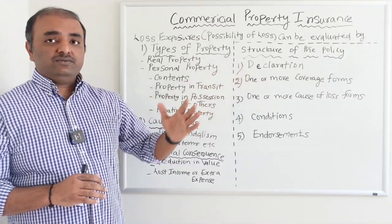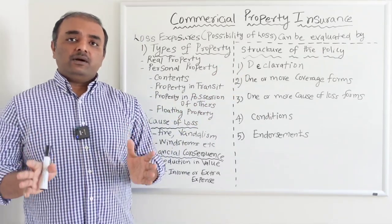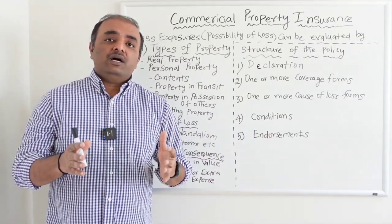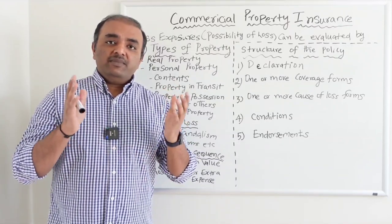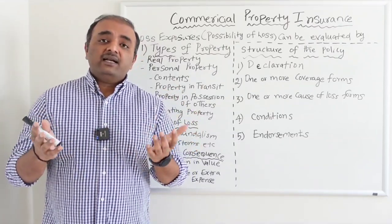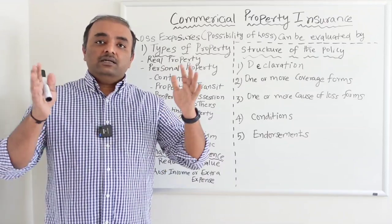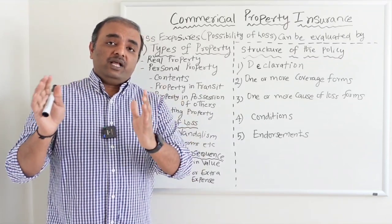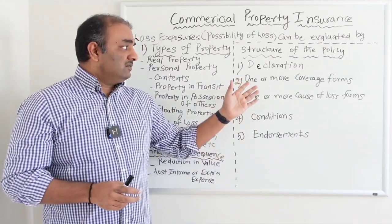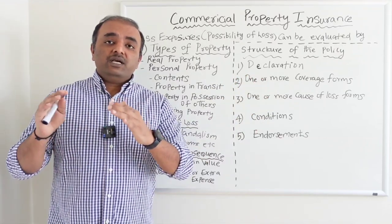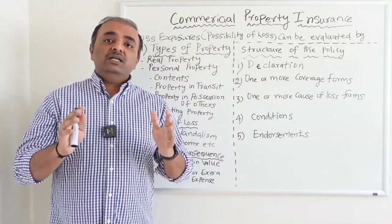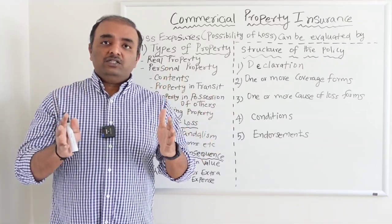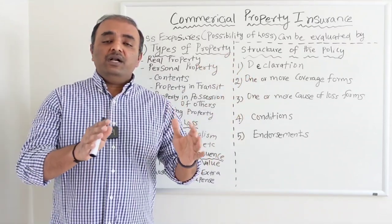The second component is one or more coverage forms. Commercial property is not just coverage for the building or personal property — it also includes coverage for business income loss. If your property is damaged, you indirectly lose business income for a certain number of days or months, and commercial property can take care of that through a separate form. The most commonly used coverage form is the Building and Business Personal Property form, which we will discuss in the next session.